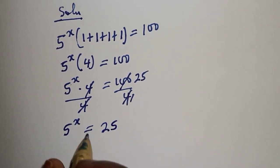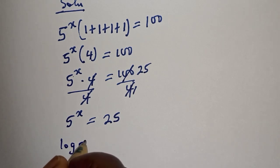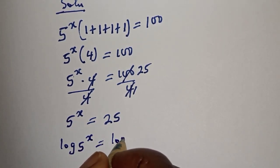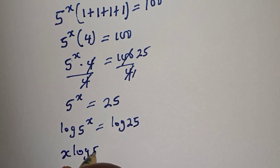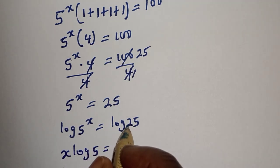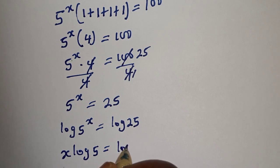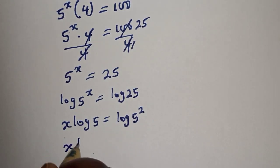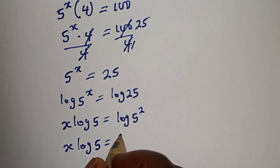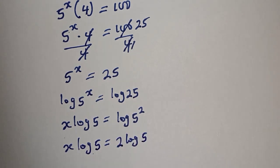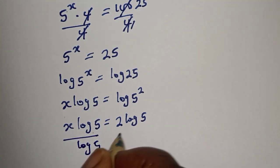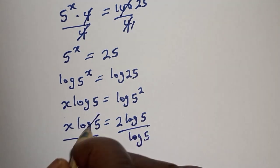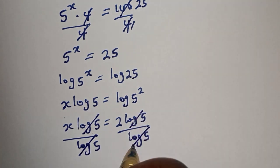Let's take the log of both sides. Log of 5 raised to power s is equal to log 25. So s log 5 is equal to log 25, which can be written as log 5 squared, giving s log 5 equals 2 log 5. Let's divide both sides by log 5 — log 5 cancels log 5.